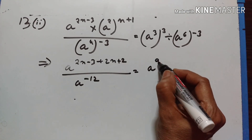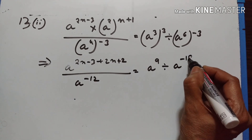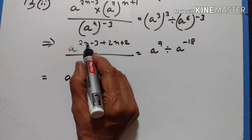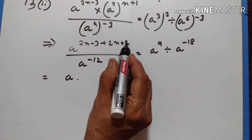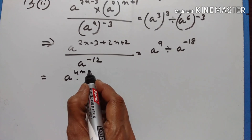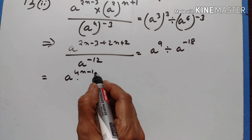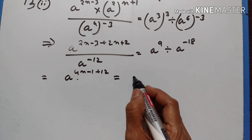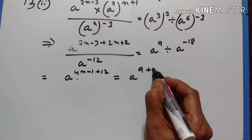This is 9 divided by a to the power of minus 18. a to the power of 2n plus 2n is equal to 4n. Minus 3 plus 2 is equal to minus 1. So 4n minus 1, minus 12 becomes plus 12, is equal to a to the power of 9, minus of minus 18, that is plus 18.